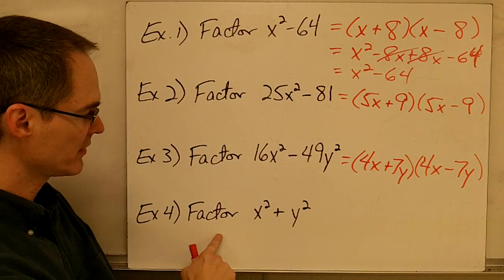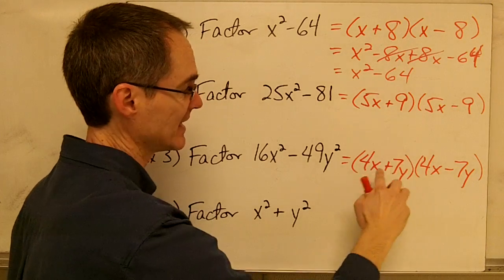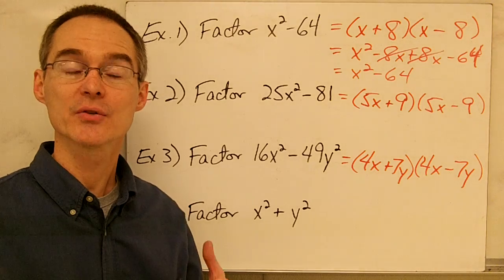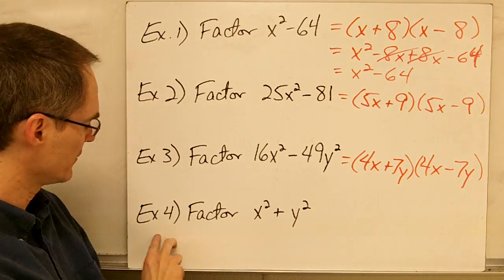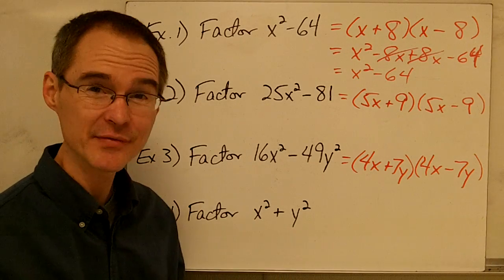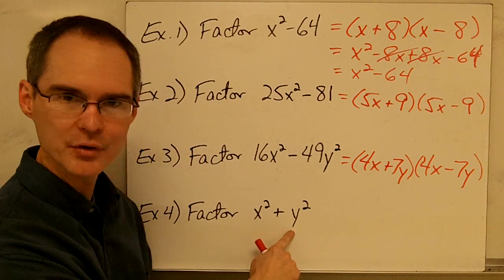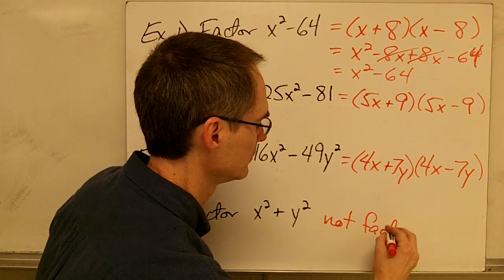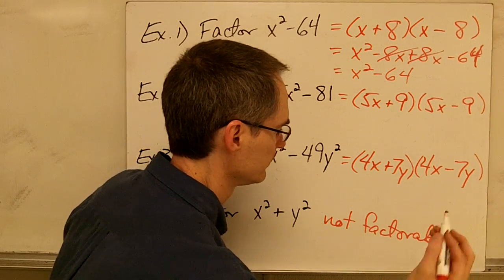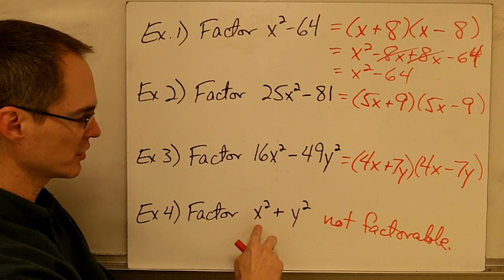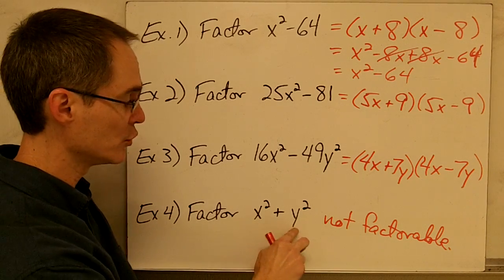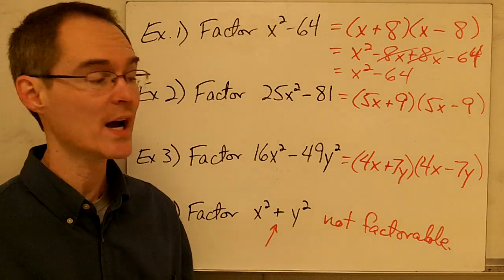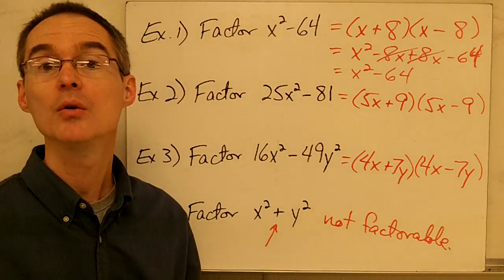Note that this factoring technique — factoring into a plus b times a minus b — only works for the difference of two squares. In example four, we have the sum of two squares, and that expression is not factorable. When looking at your expression, don't just check that you have two perfect square terms — they must be subtracted. It has to be the difference of two squares; otherwise, the a plus b times a minus b technique will not work.